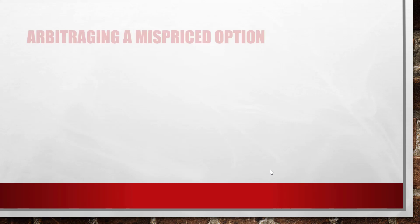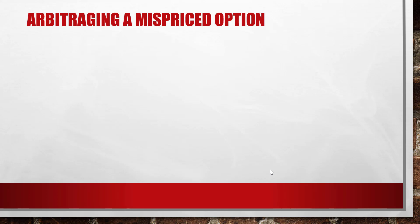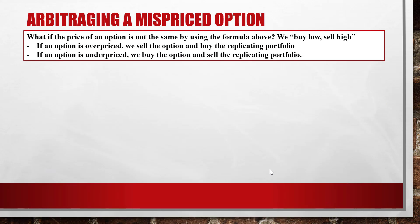Now we will use arbitrage for a mispriced option. What if the price of an option is not the same as the price given by the formula? The answer is an arbitrage opportunity — buy low, sell high. There are two possibilities: either the replicating portfolio price is greater than the option price, or it is lower. If an option is overpriced, we sell the option and buy the replicating portfolio. If an option is underpriced, we buy the option and sell the replicating portfolio.